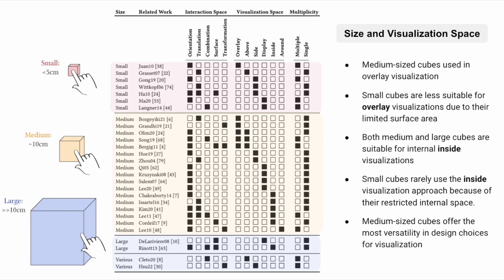The visualization space is also influenced by the size of the tangible cubes. For instance, medium-sized cubes often employ the overlay strategy, which maps visual information directly onto the surface of the cube, rendering sides of the cubes as display media. In contrast, the constrained surface area of small cubes makes them less suitable for overlay visualizations. Both medium and large cubes are observed to be used in the inside visualization approach, rendering information within the cube. Notably, medium-sized cubes demonstrate the greatest versatility as they span a wide range of design choices in the visualization space. This flexibility stems from their balance size, which provides ample surface area and inner volume, while maintaining ease of manipulation when designed carefully.